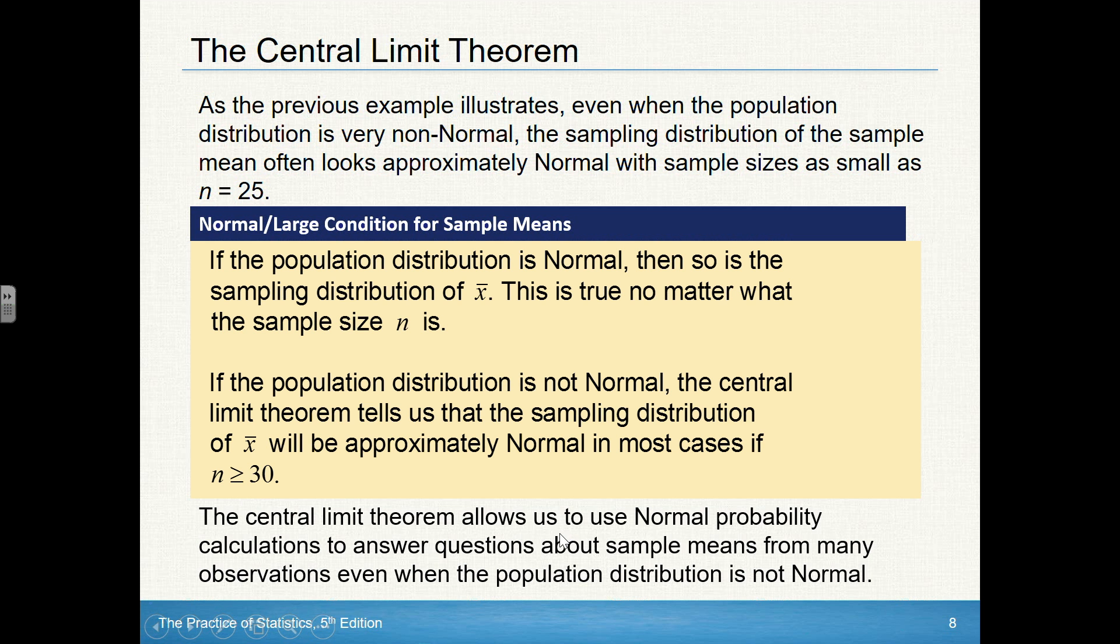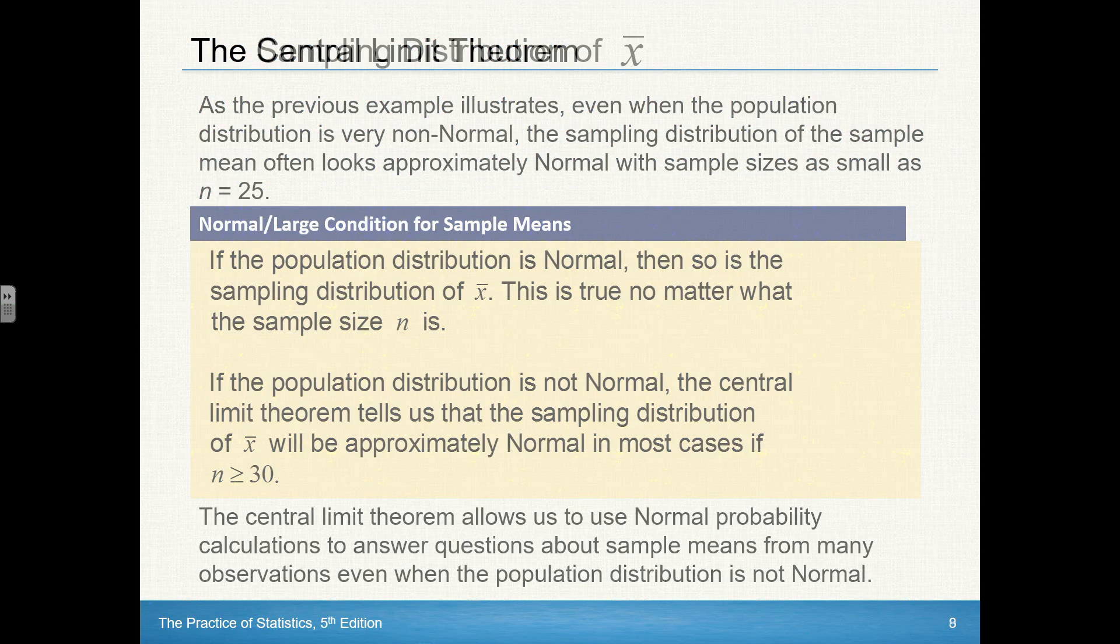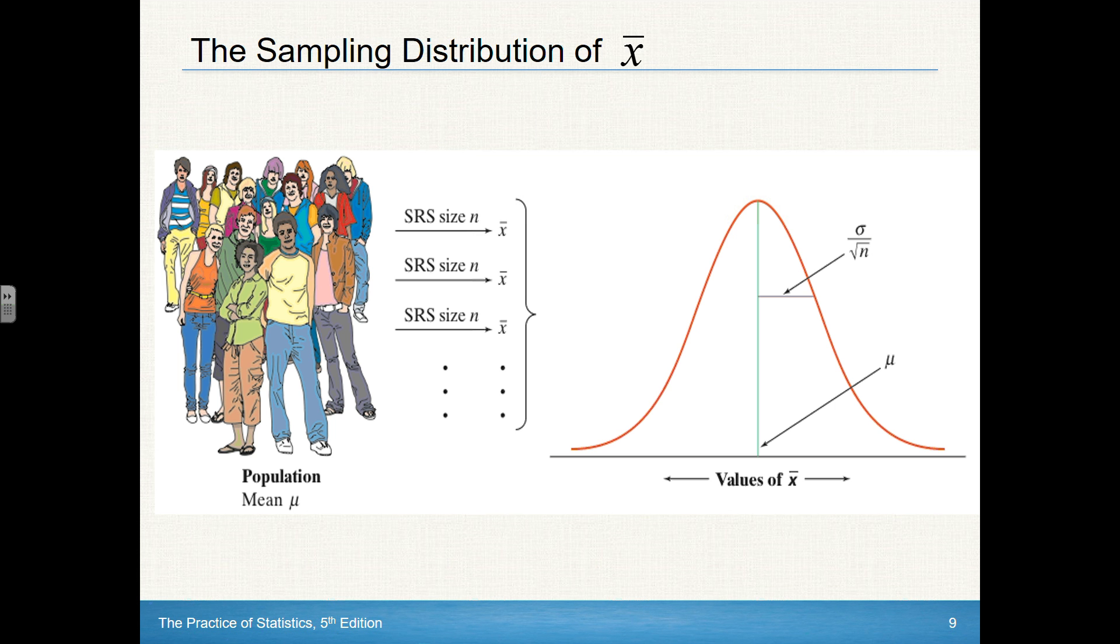The central limit theorem allows us to use normal probability calculations to answer questions about the sample means from many observations, even when the population is not normal. So when we talk about the sampling distribution of x bar, same idea. We take a sample, take a whole bunch of different samples. We're going to get different x bar values, but if you take the mean of the x bar, that's going to be mu, and the standard deviation of that sampling distribution is going to be sigma, which is the standard deviation of the population, divided by root n.